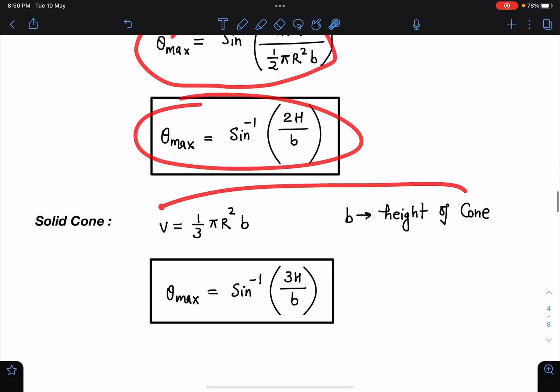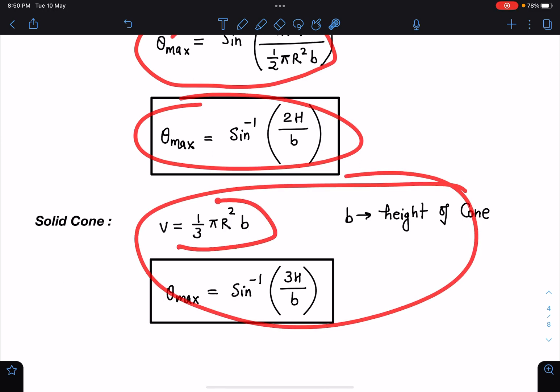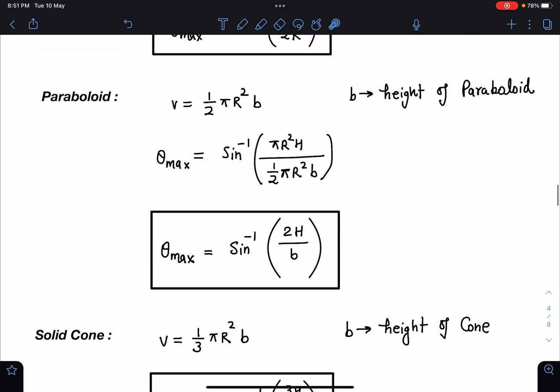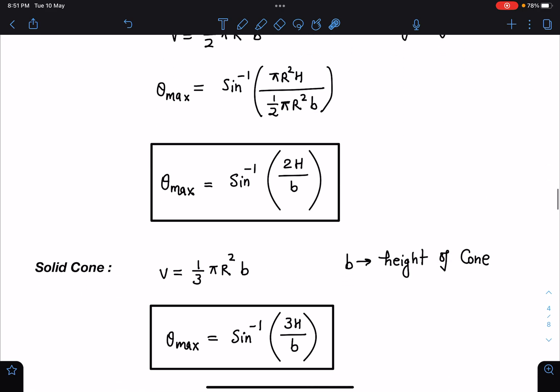Similarly for solid cone you can do. Volume will become 1 by 3 πr² into b height of cone, sin inverse 3h by b. We can have tetrahedrons also, we can have pyramid also, we can have any random object. Only thing is this logic you must remember and you will be good to go. I haven't considered prisms and all but prisms or ellipsoids, those objects are also covered in this.